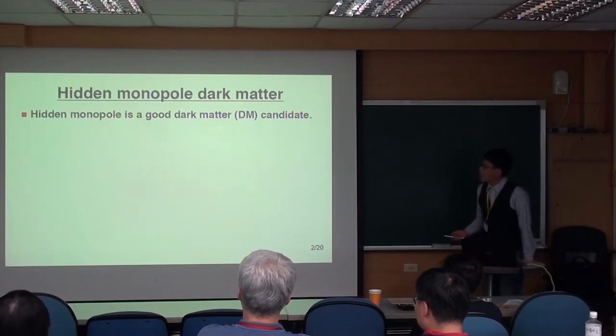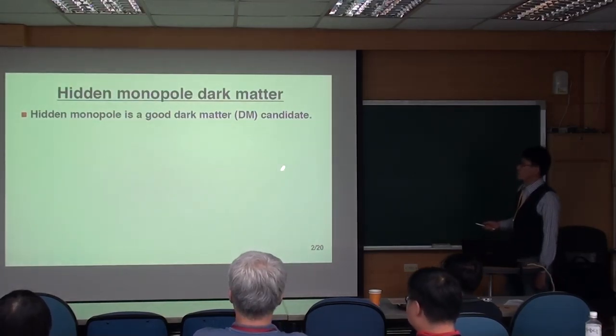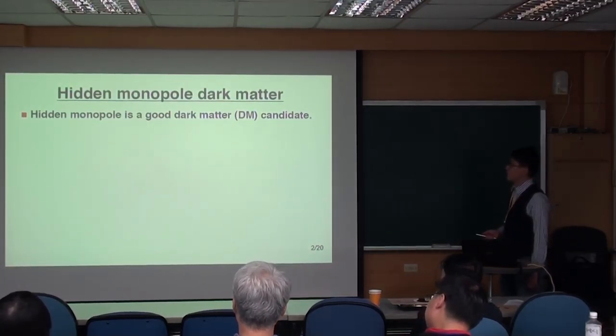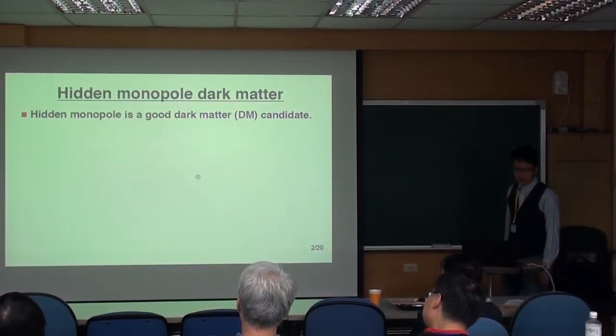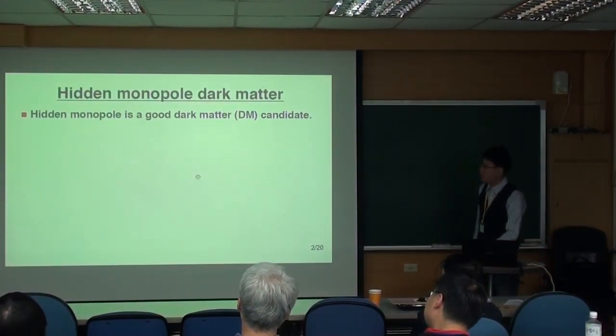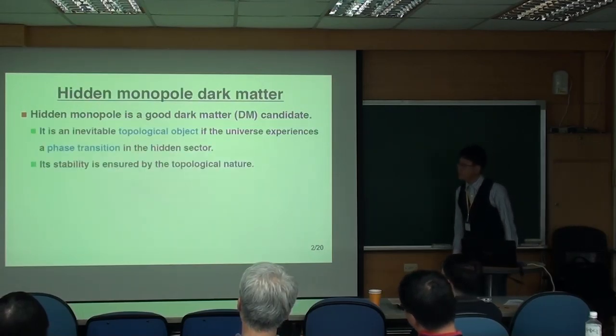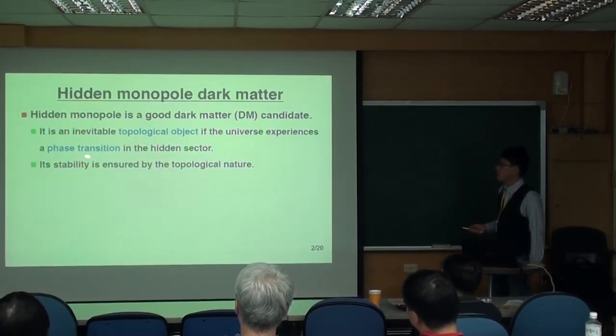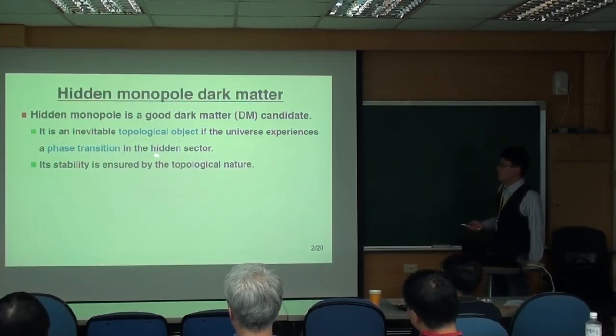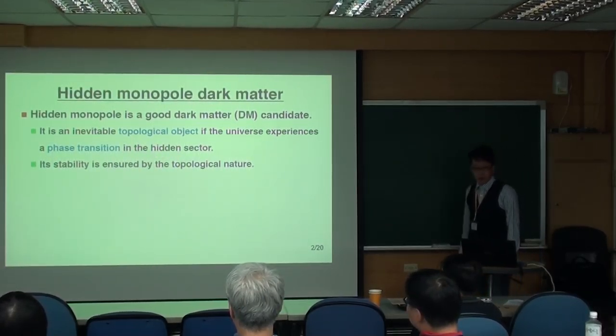Let me start from the hidden monopole dark matter. Actually, hidden monopole is a very good dark matter candidate, and there are two main reasons. The first reason is that it is an inevitable topological object in the early universe.